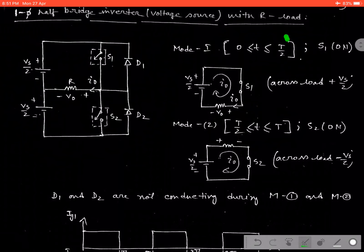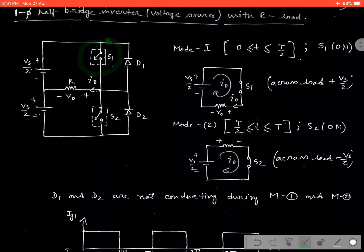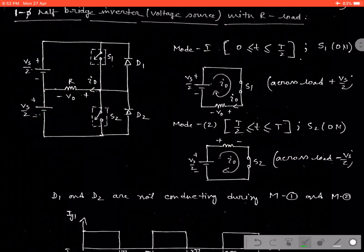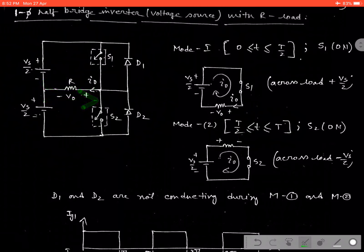After T/2, when we are applying the triggering pulse during T/2 to T, the switch S1 should be in off state and S2 becomes on. Then the current starts flowing from this direction — source to load — and coming back to the supply. That means, if we consider both mode operations, in the first case the current was flowing in one direction, and in the next case the current starts flowing in the opposite direction.